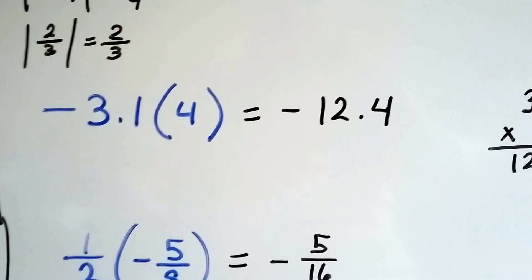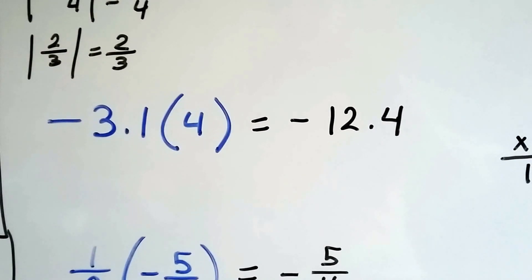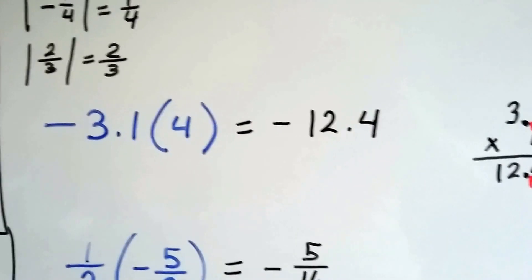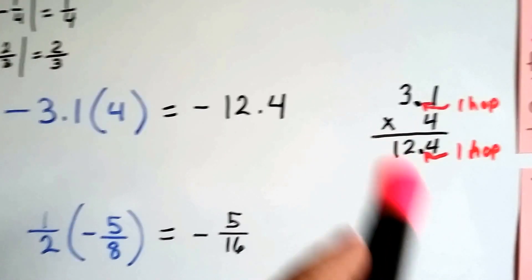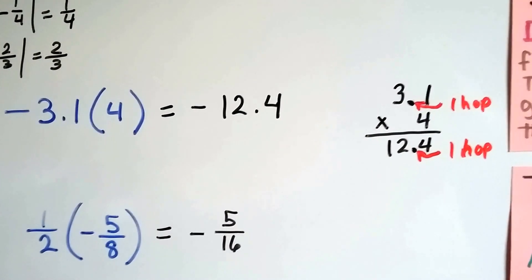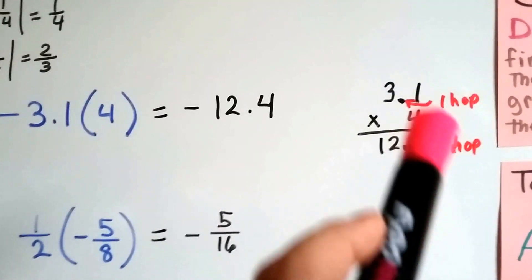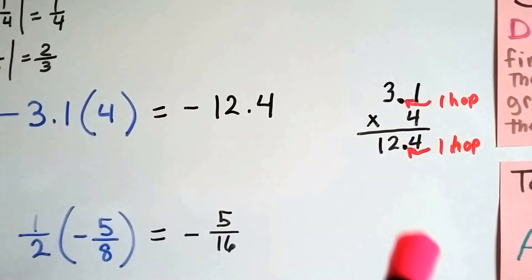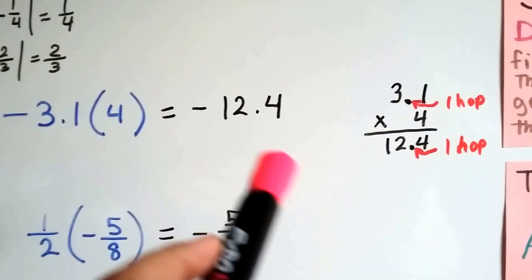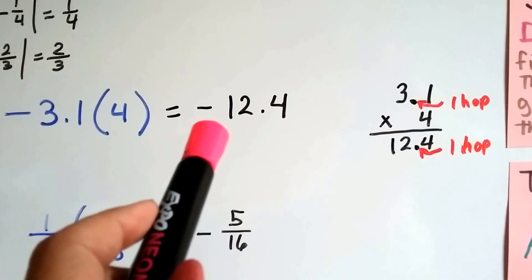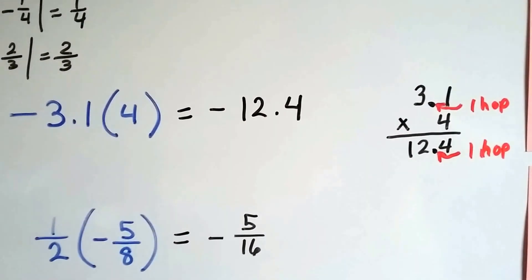If we've got decimals, same thing. Negative 3.1 times a positive 4. We can stack them, because that's easier to multiply decimals when we stack them. And 4 times 1 is 4. 4 times 3 is 12. There was one hop in the equation, so there's one hop in the answer, in the product. And because they're unlike signs, it's going to be a negative, so we have negative 12.4.